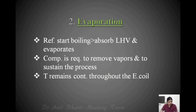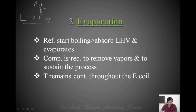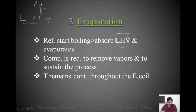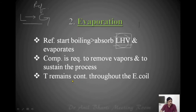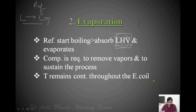The second process is the evaporation process, which means the liquid refrigerant is converting into vapor form — a phase change is happening. When phase change happens, temperature remains constant. So the latent heat of vaporization is absorbed by the refrigerant as it converts from liquid to vapor form, producing the cooling effect. The temperature will be constant throughout the evaporator coil from the very start to the very end. This is a very important characteristic of the vapor compression system — it produces a very even temperature across the evaporator coil.